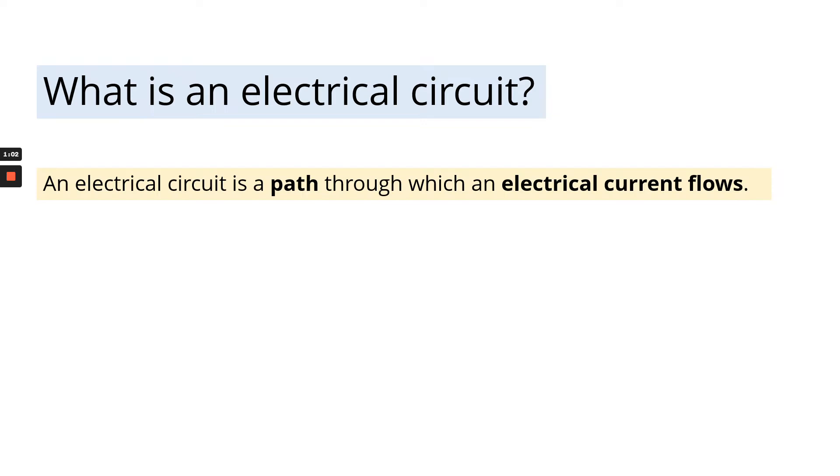So what is an electrical circuit? An electrical circuit is a path through which an electrical current flows. So it needs to be a closed loop, a path where electrical current flows.